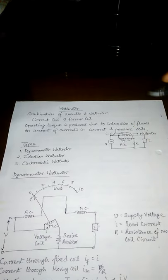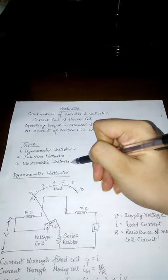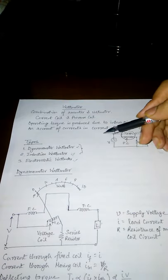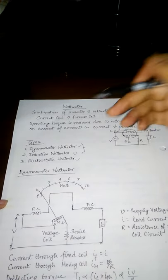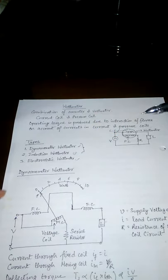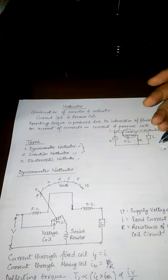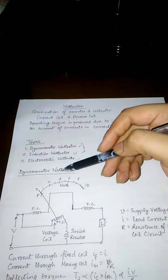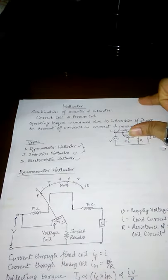There are three types of Wattmeter: Dynamometer type, Induction type, and Electrostatic type. The first two — dynamometer and induction — are commonly used. Today we are going to discuss the principle and construction of the dynamometer Wattmeter. A main advantage of the electrodynamometer type instrument is that it can measure AC or DC quantities with the same efficiency.